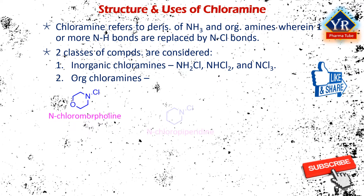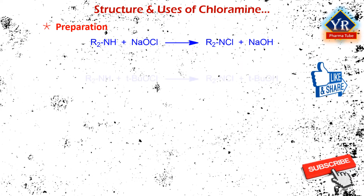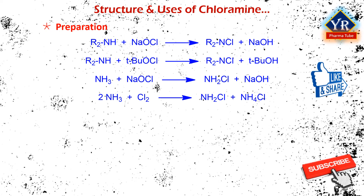Industrially, chloramines are commonly produced by the action of bleach on secondary amines. Tertiary butyl hypochlorite is often used instead of bleach. At laboratory scale, in dilute aqueous solution, chloramine is prepared by the reaction of ammonia with sodium hypochlorite. Gaseous chloramine can be obtained from the reaction of gaseous ammonia with chlorine gas diluted with nitrogen gas. Pure chloramine can also be prepared by passing fluoroamine through calcium chloride.